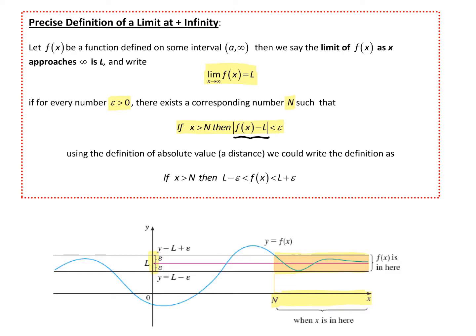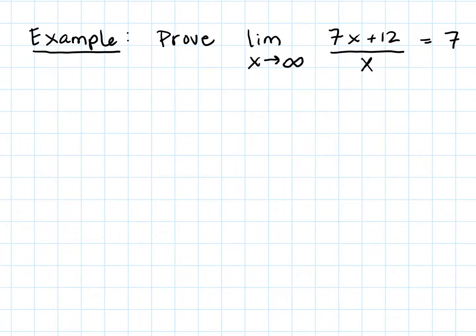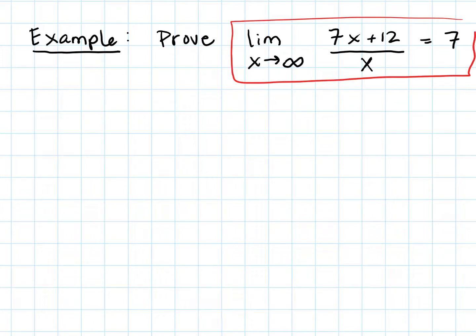Let's go ahead and do an example. We want to prove this limit. When we look at it, we have algebraic techniques: we could divide 7x + 12 by x, use the fact that 12/x goes to 0 as x grows without bound, and get the limit 7. We have the computational techniques to show this is true, but now we want to prove it with a precise definition.